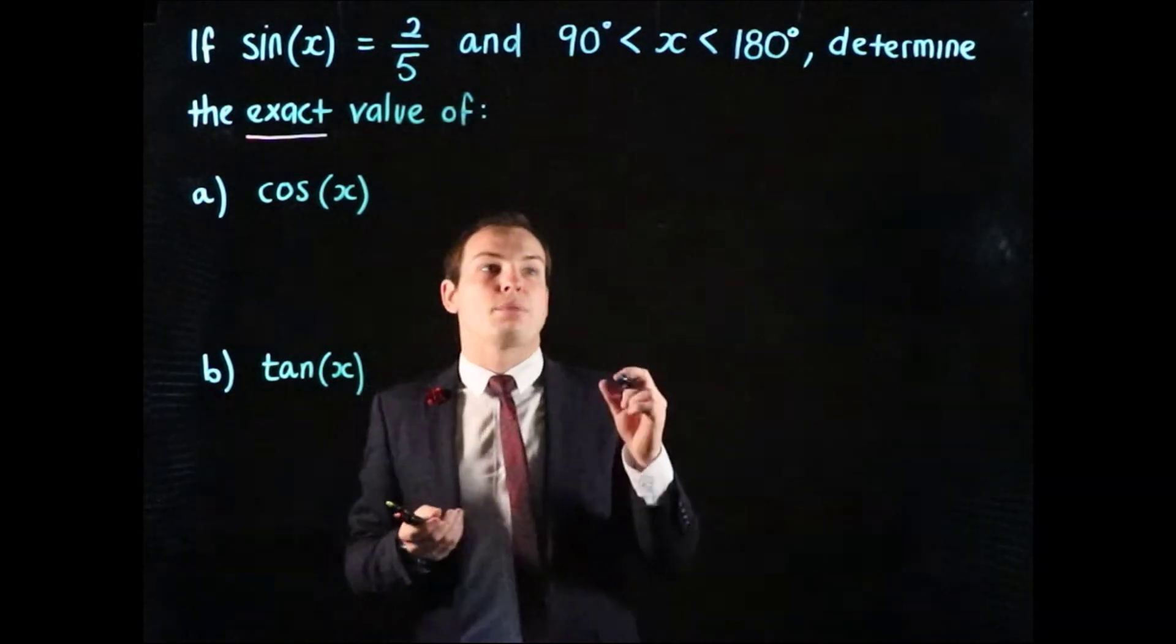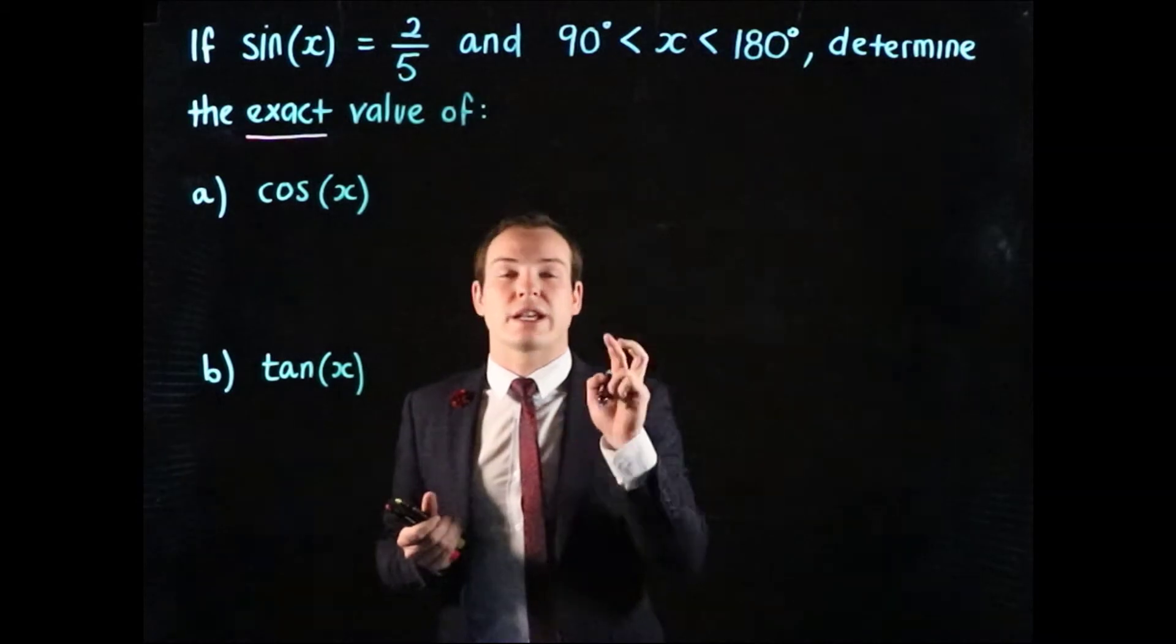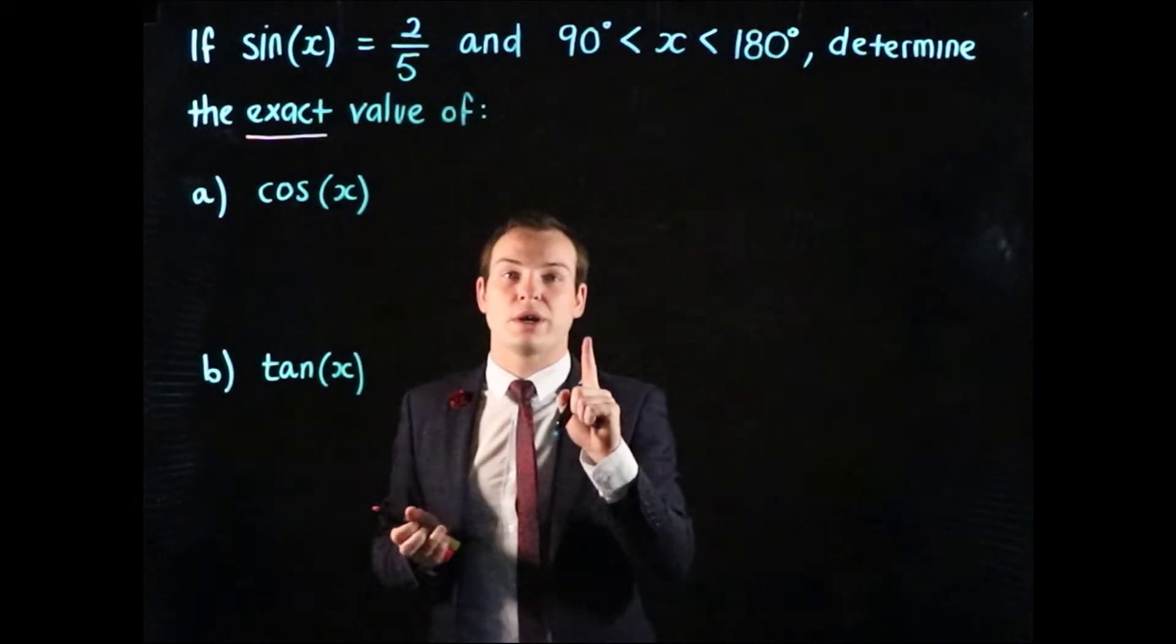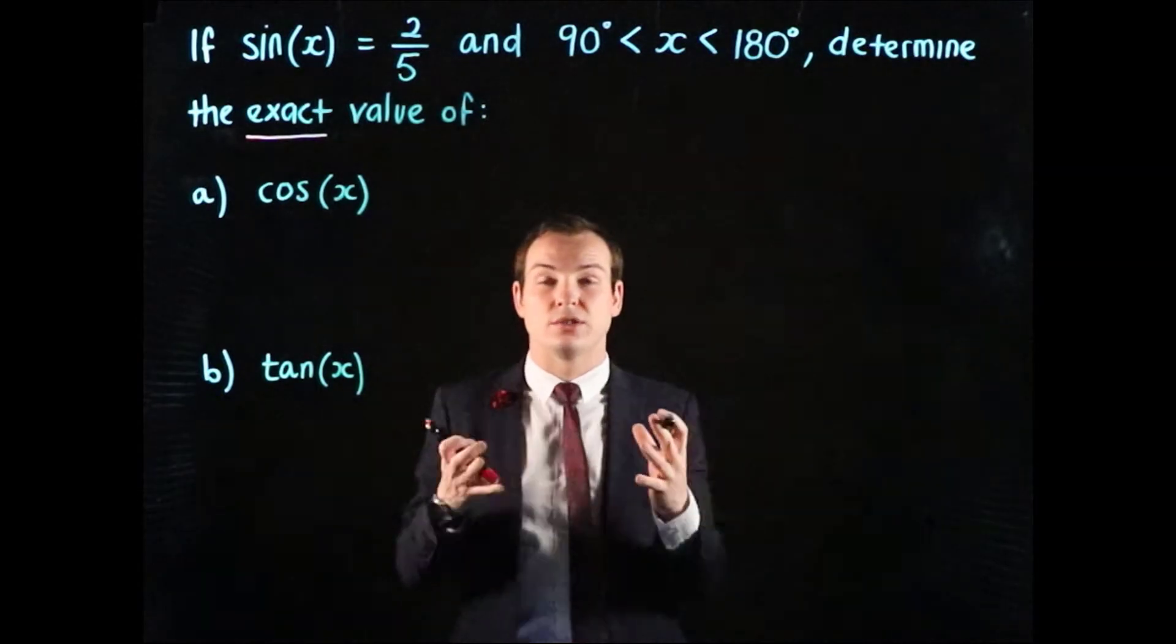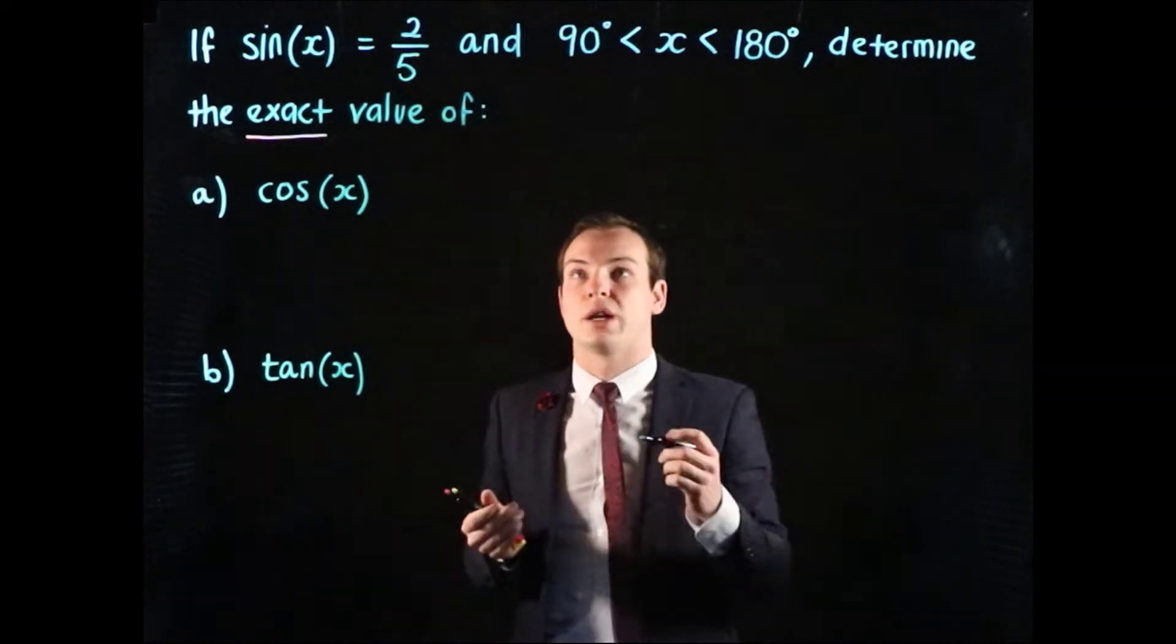The diagram we're going to start with, there's actually going to be two diagrams here, but the first one is a right angle triangle because we know trigonometry is related to not only the unit circle but also right angle triangles.